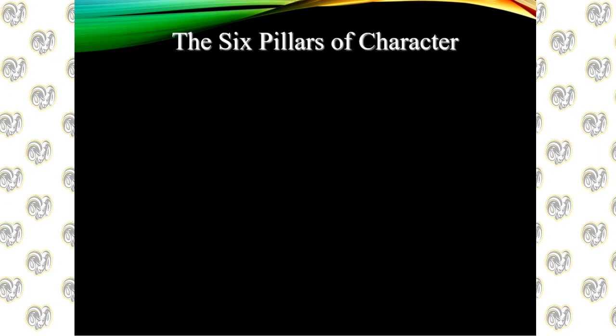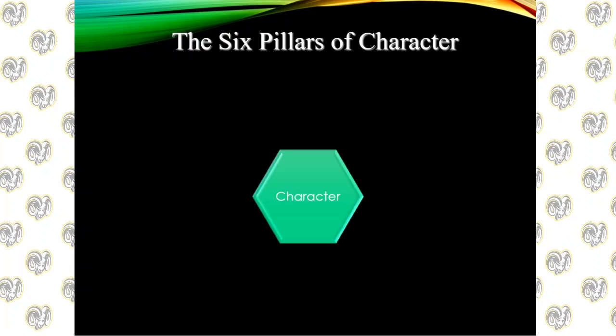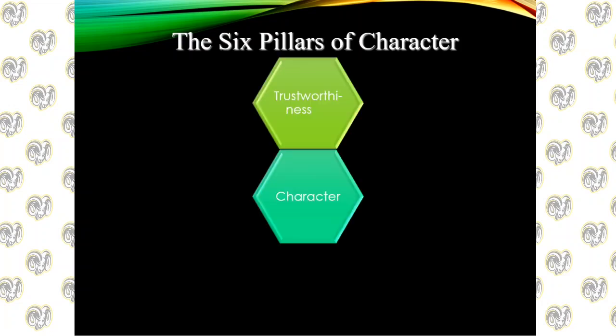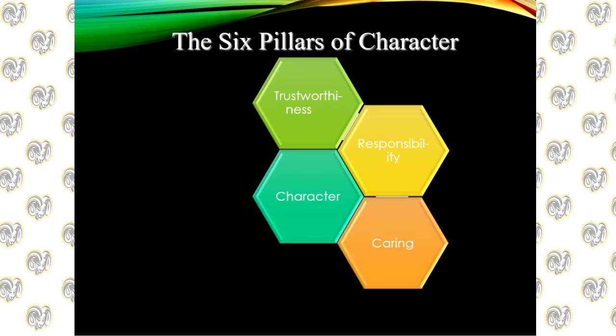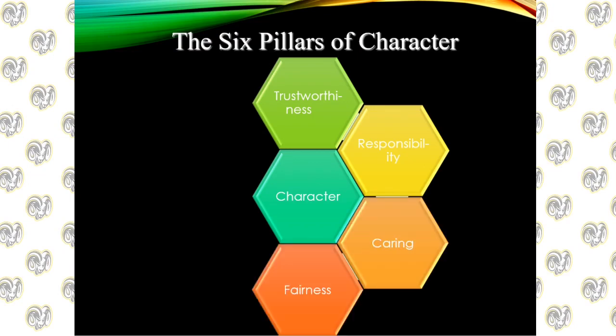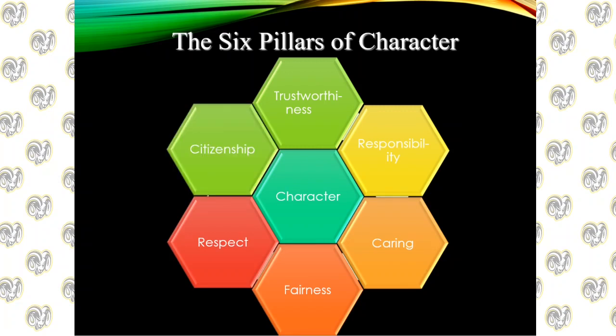Now we have the six pillars of character. On the test over ethics, you'll need to give all six pillars and examples of ethical and unethical behavior within each. The six pillars are: trustworthiness, responsibility, caring, fairness, respect, and citizenship.